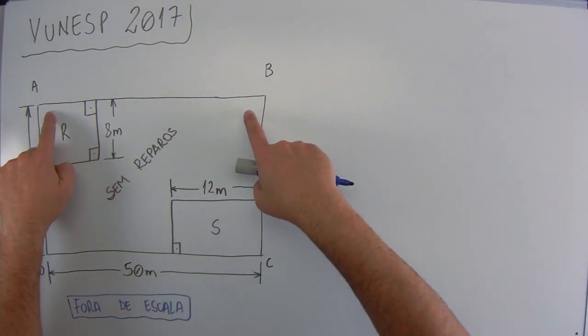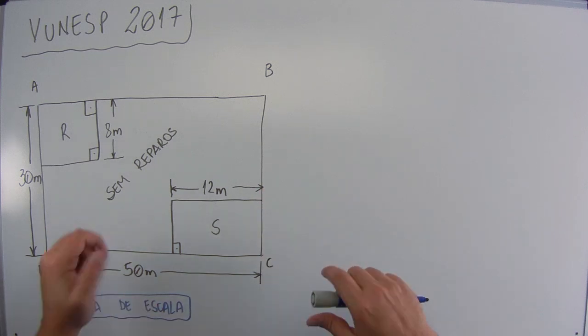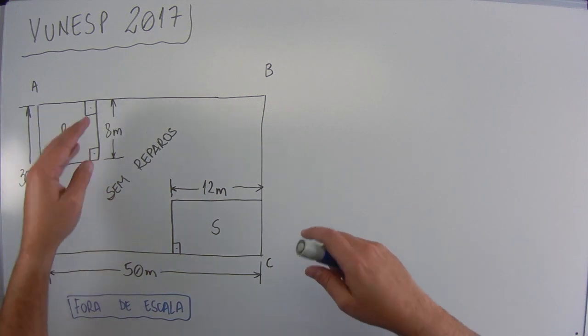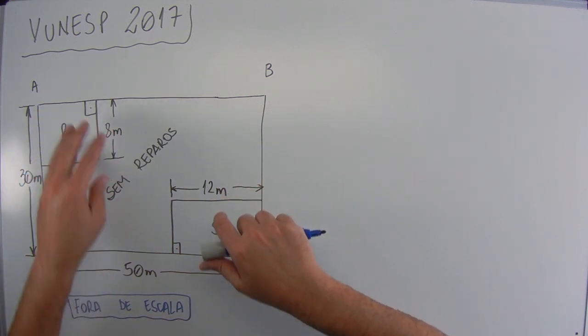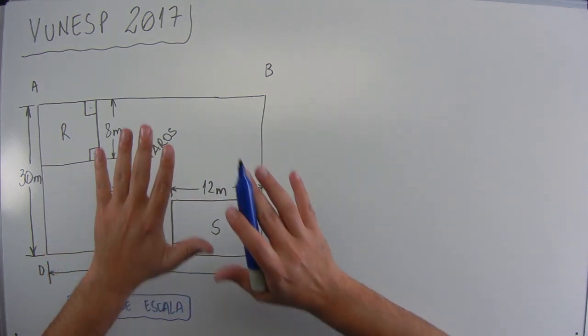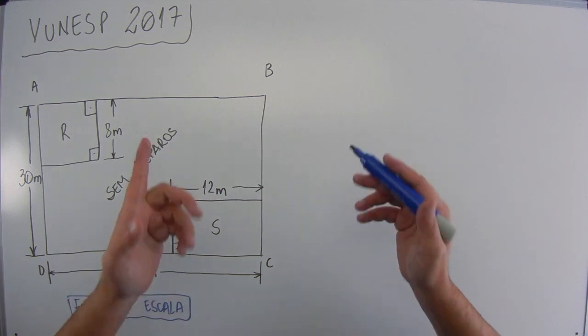Por exemplo, aqui tem 30, aqui esse lado aparenta ser maior. Na verdade ele é maior porque tem a figura que tem aqui que tá escrito 50. Então esse lado é menor, 30, esse lado é maior, é 50. Eu vi isso comparando os valores e não o tamanho da figura. Por exemplo, aqui não dá pra dizer sem ler o enunciado que aqui esse lado é igual a esse, a menos que no enunciado esteja dizendo que isso aqui é um quadrado, esse lado é menor. Ou seja, não confie na sua figura visual, confie apenas nos dados escritos e no enunciado, beleza?